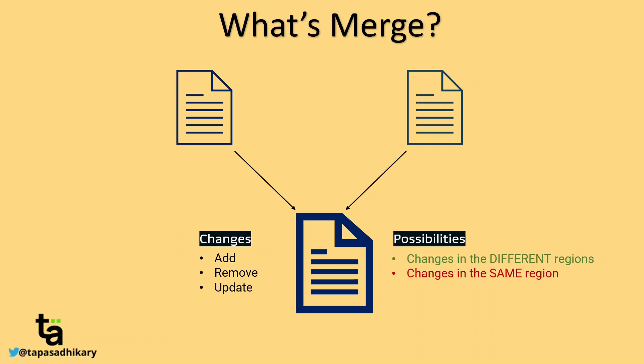What Git can do is tackle changes in different regions by itself while merging. But where Git doesn't take the decision is when the changes are in the same region. In that case, Git doesn't know whether to keep this change, keep that change, or keep both changes. That is when manual intervention is required — that is when you, as a developer, have to resolve the merge conflict.